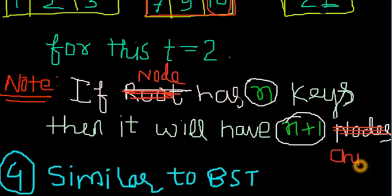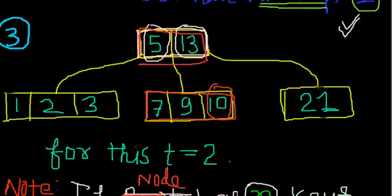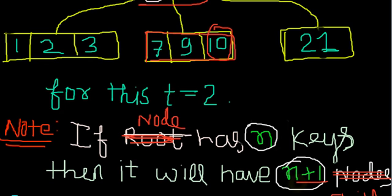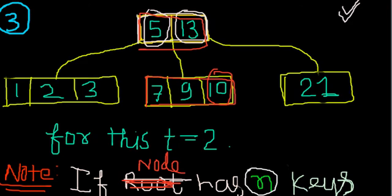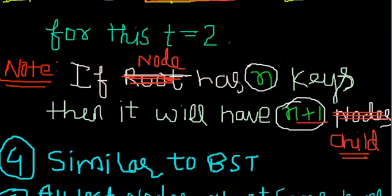What is that? See, if a node - this is a node - has n keys, how many keys does it have? 1 and 2. So it will have n plus 1 children. This is 1 child, this is 2 children, this is 3 children. 2 keys means 3 children.